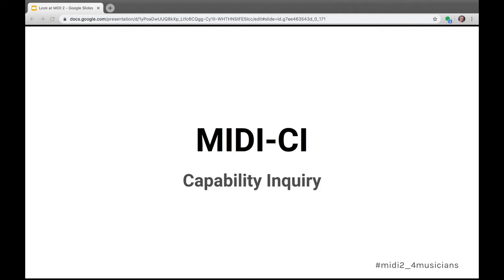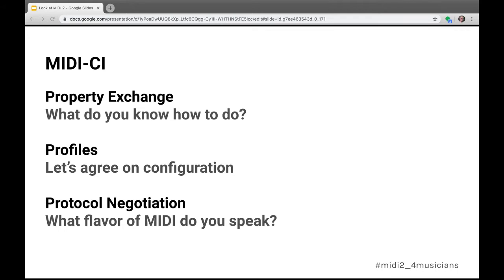Once MIDI-CI is in the picture, you build what are called the three P's on top of it. The first P is property exchange, where two devices can talk to each other about what parameters and capabilities they support. The second P is profiles — a way to automate and simplify configuration of devices communicating over MIDI. The third P is protocol negotiation — what kind of MIDI do you speak? — since we're also upgrading the underlying data protocol to something called Universal MIDI Packets.